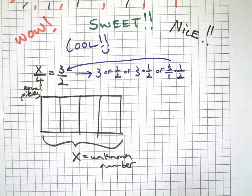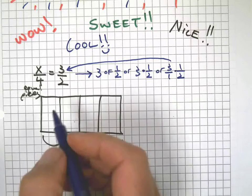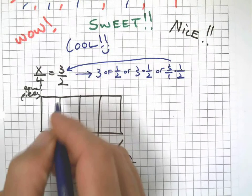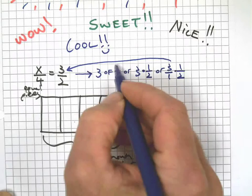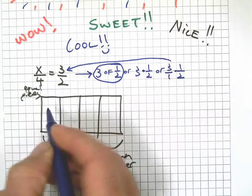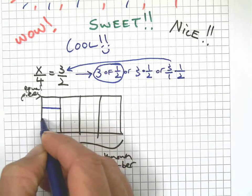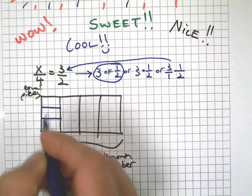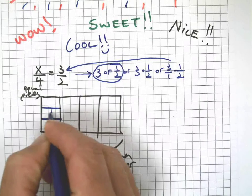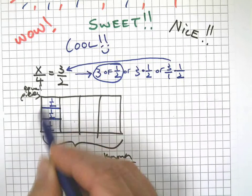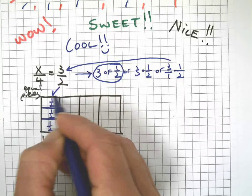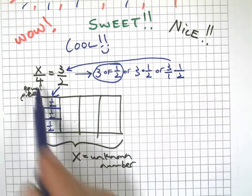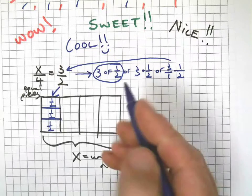But anyway, each one of these four equal pieces equals three halves. The reason why that is important is because I have to have three things in there, and each thing, each one of those three things is one half. So there's one half, one half, one half. The total makes three halves.